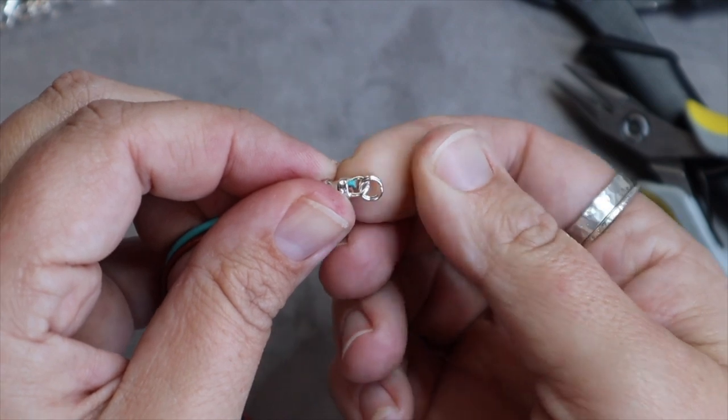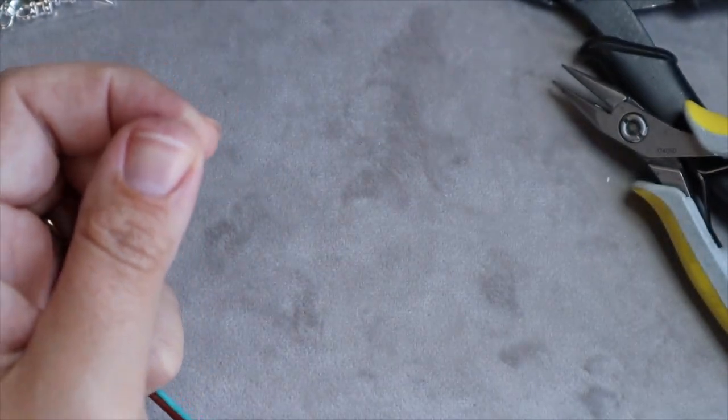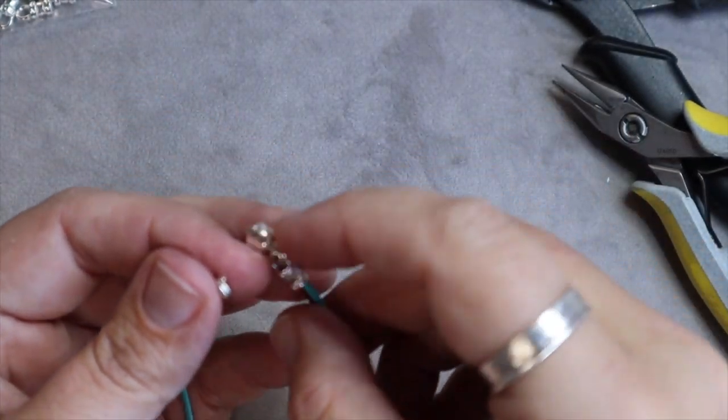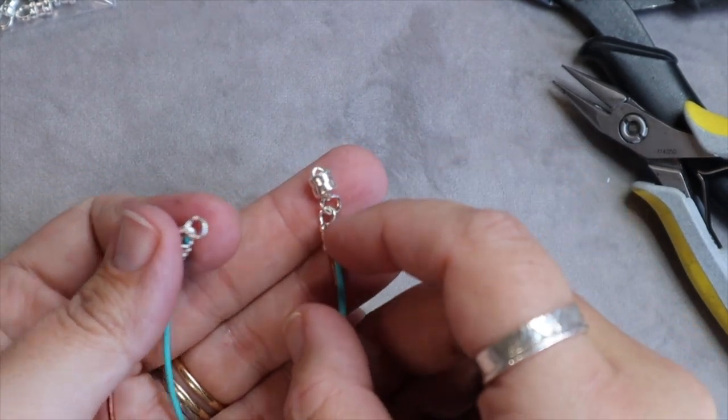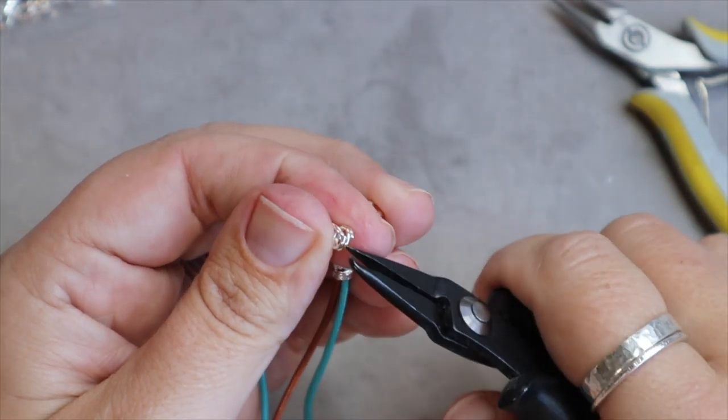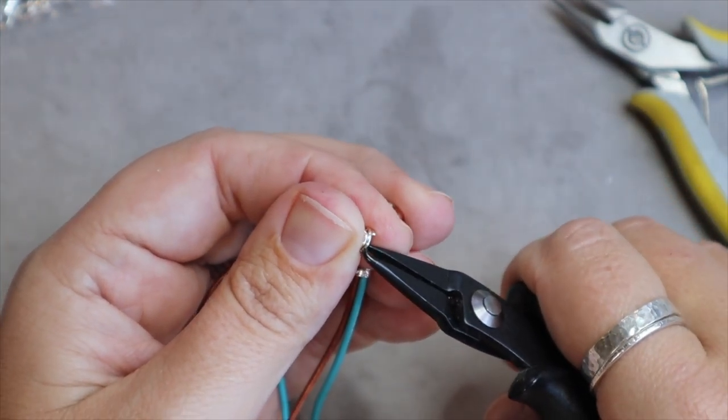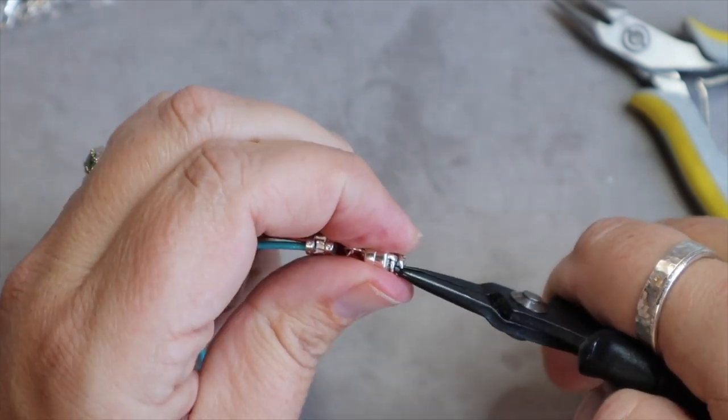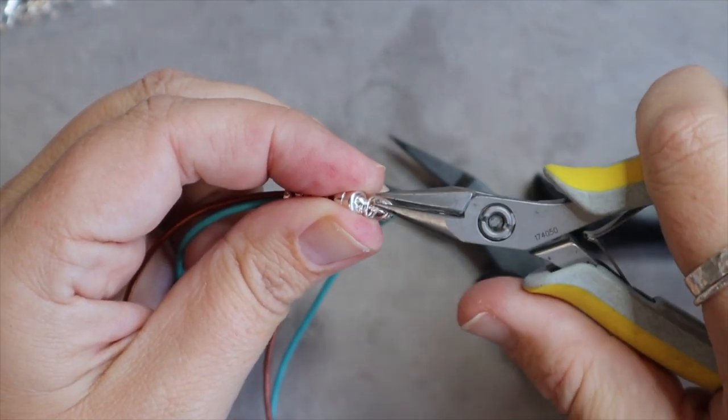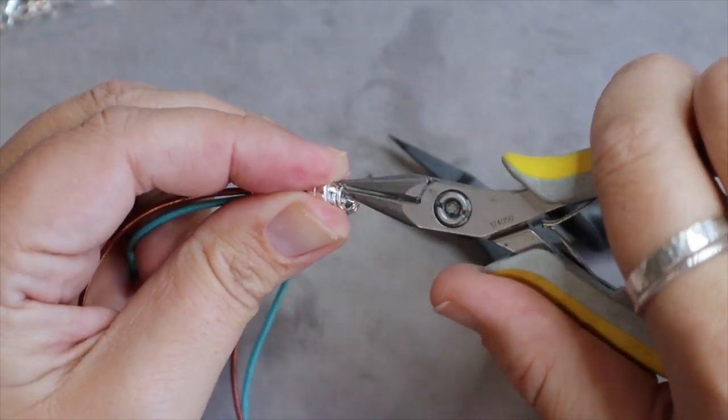Now I've already got my magnetic clasp attached to this side, so I'm going to simply just open that split ring again and then I'm going to slide my loop in and then again just turn it.